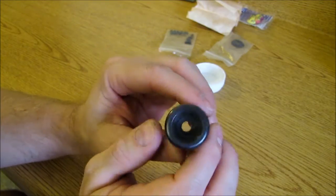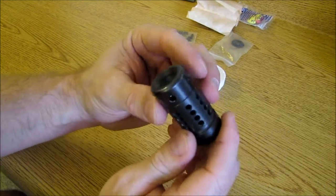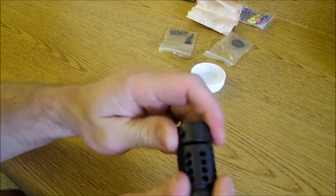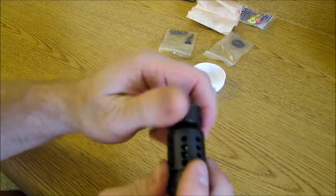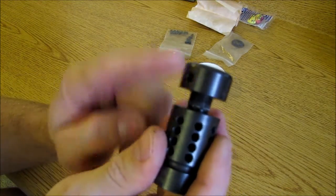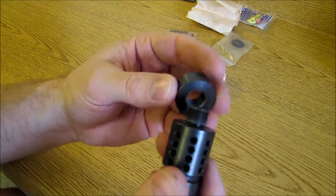If you have a good barrel and it's concentric, you shouldn't have any problems with that. One thing that I'll recommend is to put maybe a third or even a quarter of a drop of blue Loctite on this threaded portion.